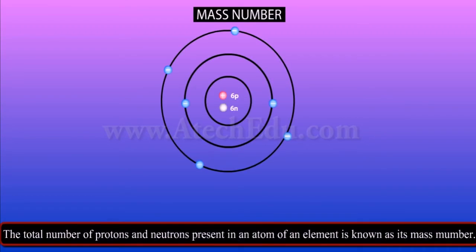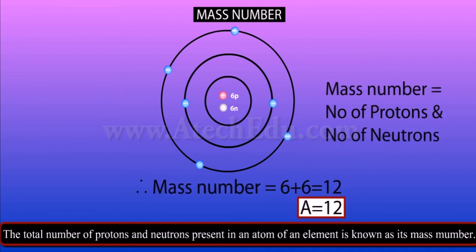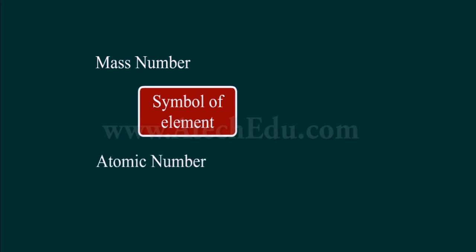The mass number is denoted by A. For example, in carbon the number of protons is six and the number of neutrons is six, hence the mass number is 12. The atomic number, mass number, and symbol of the element are written as shown.